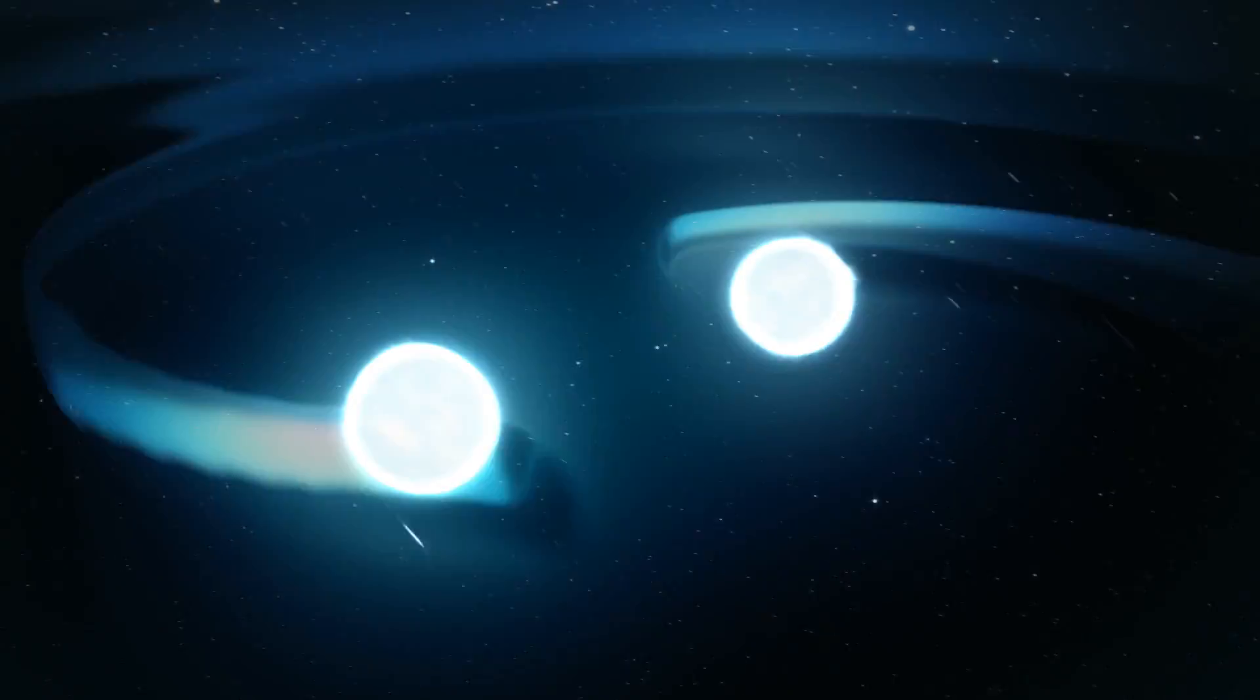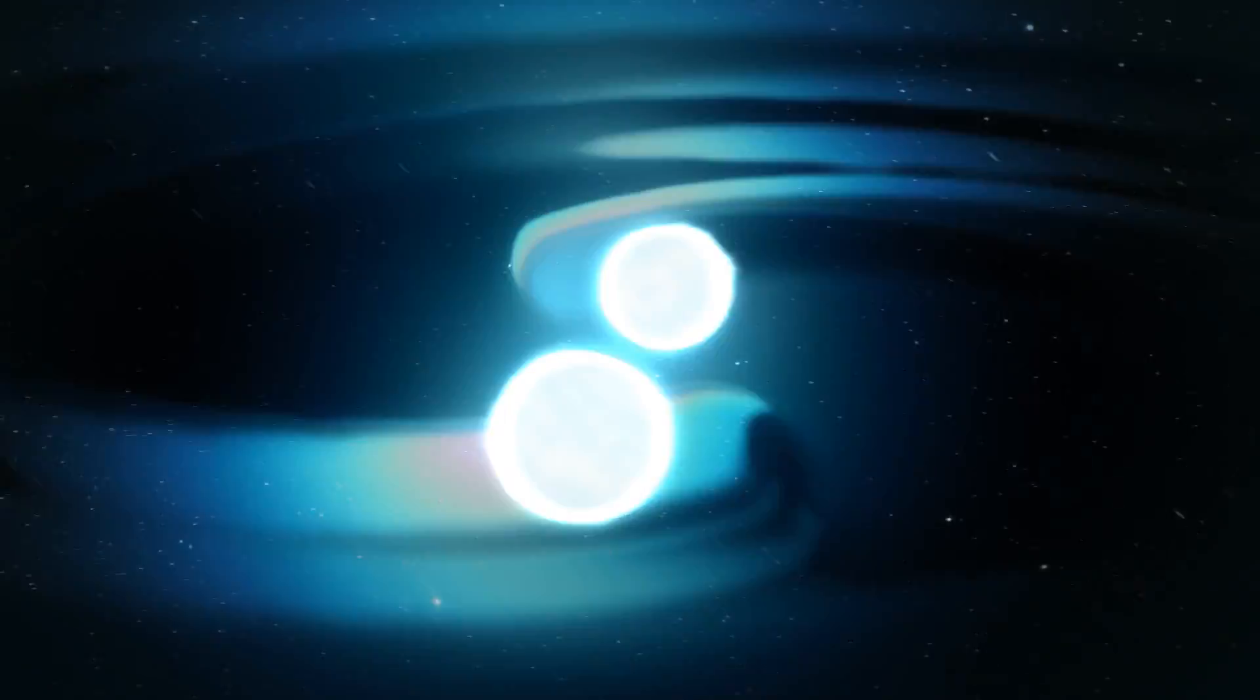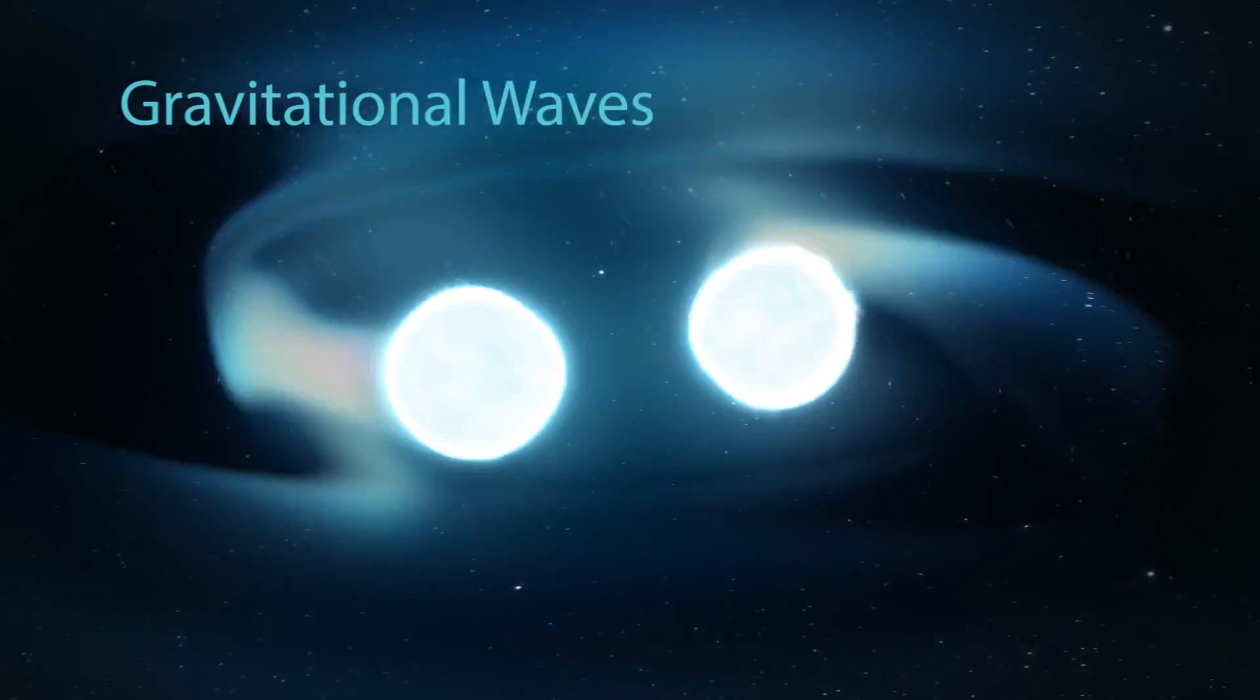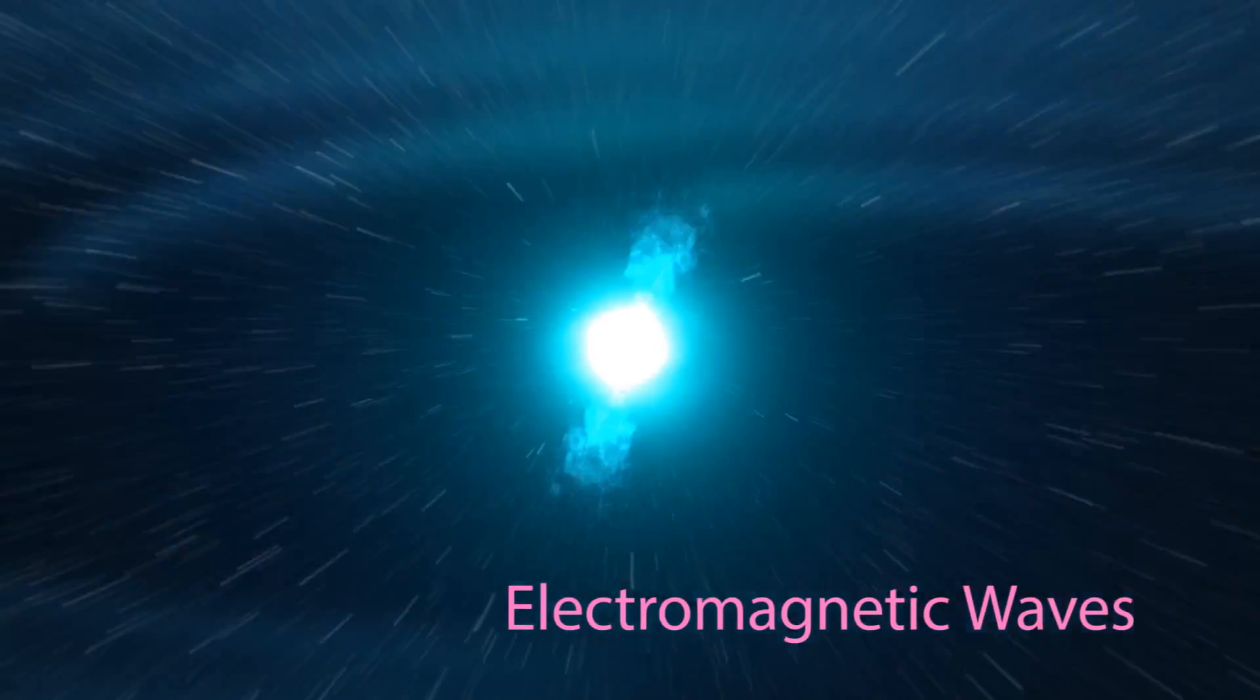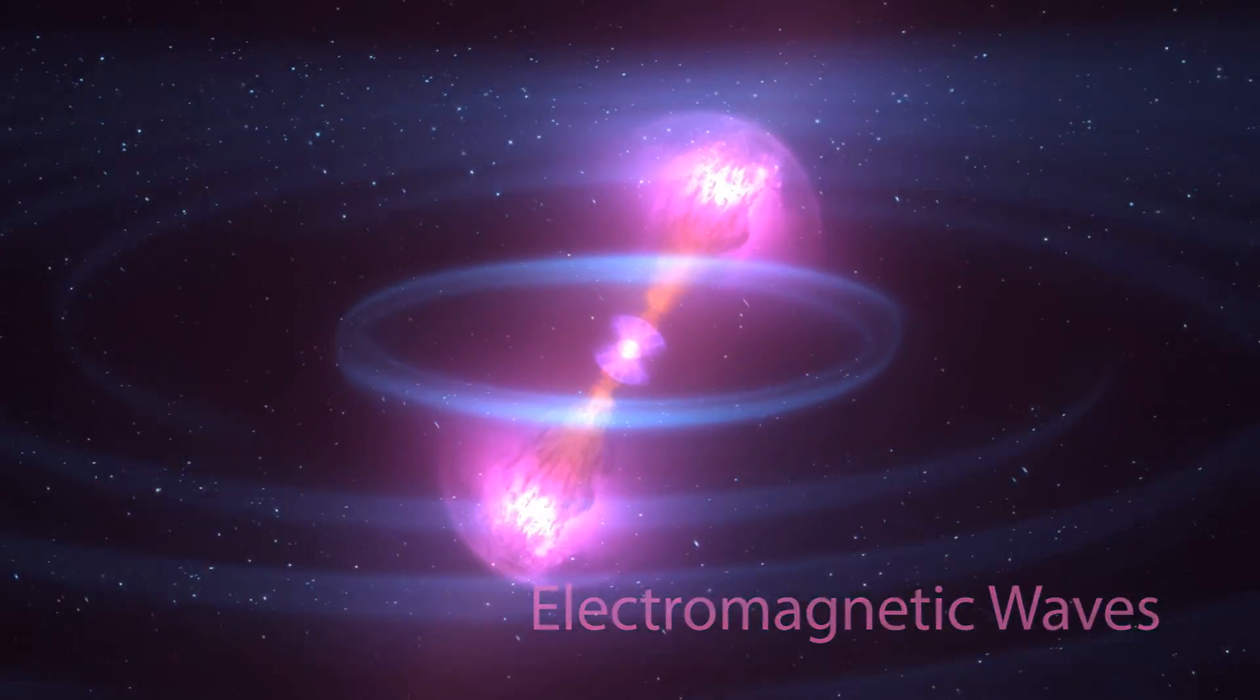For the first time, astronomers have detected a single cosmic cataclysm in both gravitational waves, ripples in spacetime itself, and electromagnetic waves, what we typically call light.